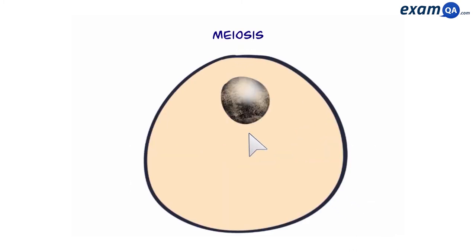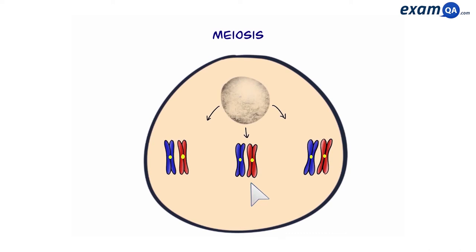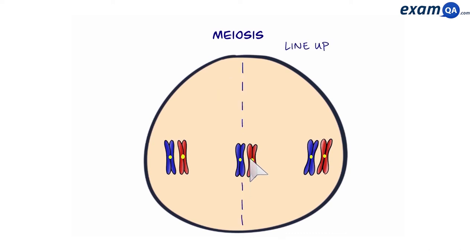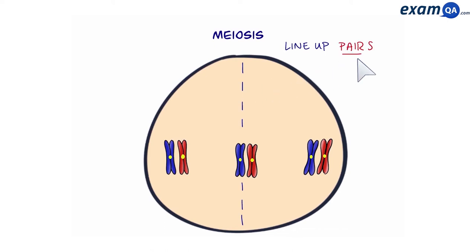We can see that the nucleus first starts to break down. The chromosomes then get released into the cytoplasm. Next, they line up in the middle of the cell, also known as the equator. However, here's where it's different to mitosis — the chromosomes line up in pairs.